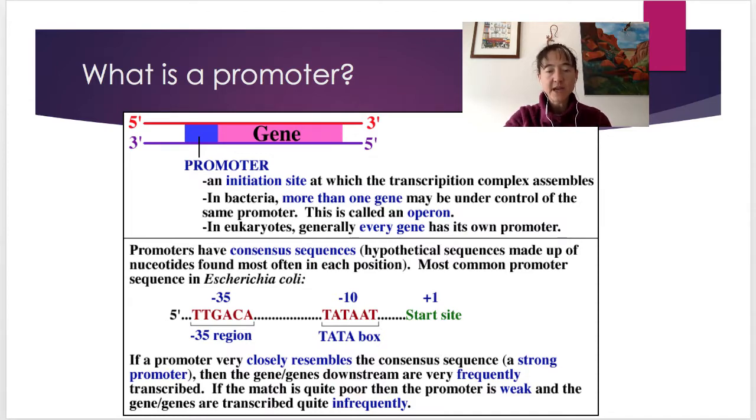In bacteria, sometimes we'll see a single promoter controlling multiple genes. Like gene 1, gene 2, gene 3, gene 4. We say then that that's an operon and that the resulting RNA that is formed is polycistronic. So like many genes on it. But in eukaryotes, we only see a single gene, monocistronic mRNAs being formed from it.